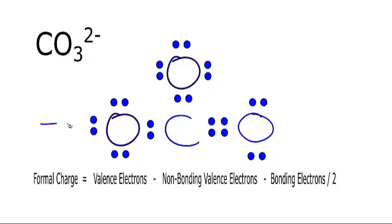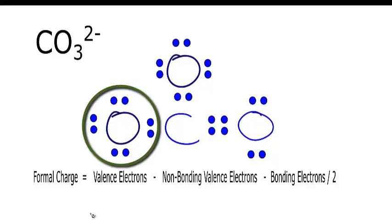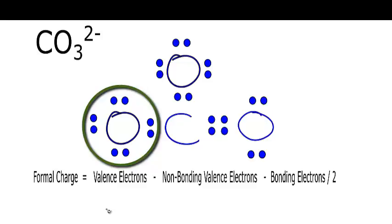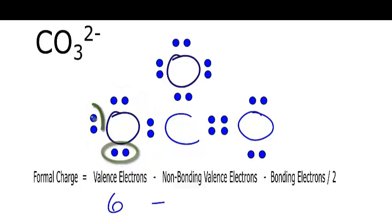We'll start with this oxygen right here. First we write the number of valence electrons for the oxygen. We get that from the periodic table. Oxygen is in group 6 or 16. It has 6 valence electrons. And we're going to subtract the non-bonding valence electrons. These are the electrons that aren't involved in bonds. We have 2, 4, 6 of those.